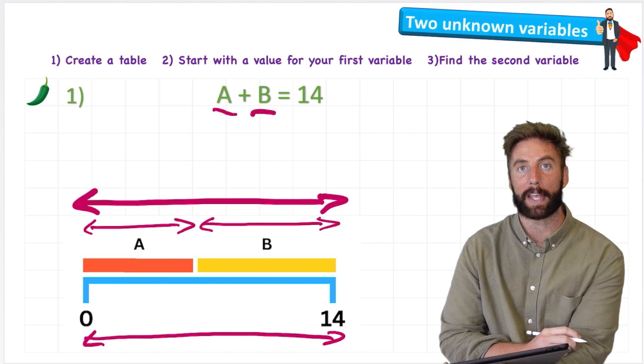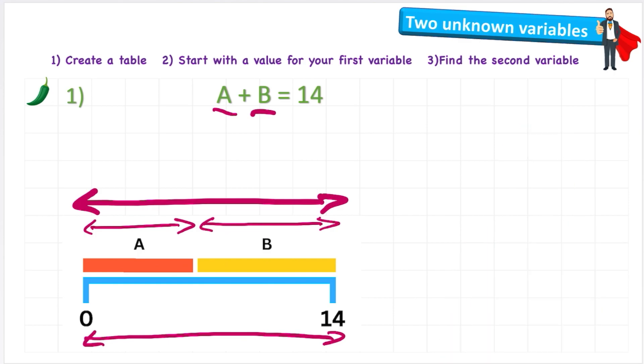So how can we start to put some values on these variables? Well, we're going to do it by making a table. So let's start with a table with A and with B. If we say that A has a value of 1, what we're saying is that this orange A is only the value of 1.